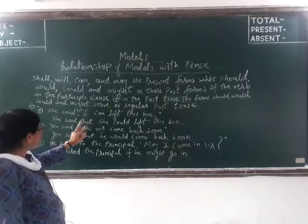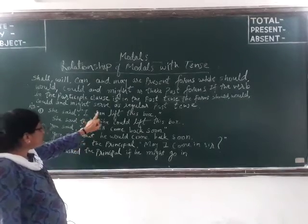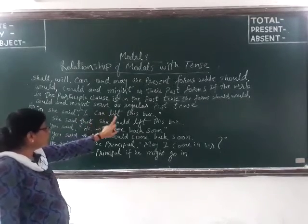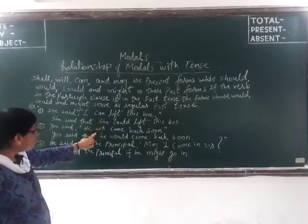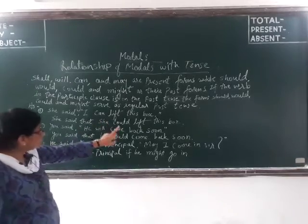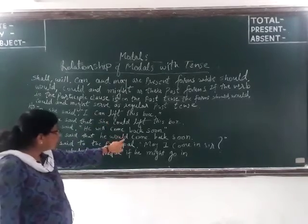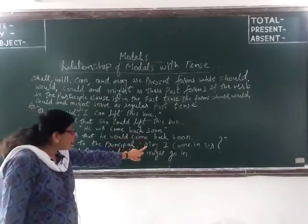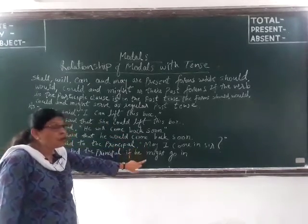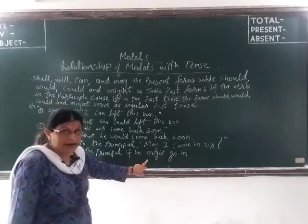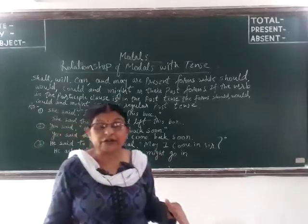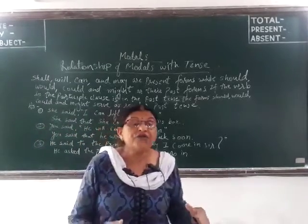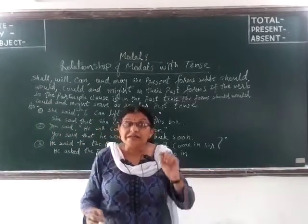So we convert can into could, will into would, and may into might. And to remove the inverted commas, we use 'that.' Clear?